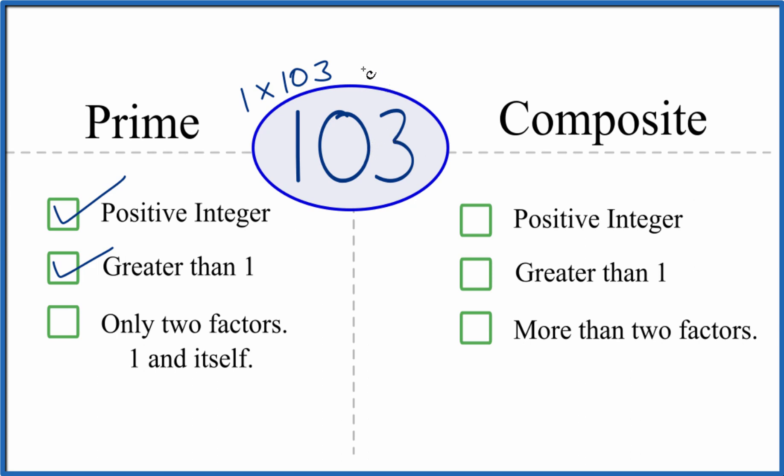It turns out that there are no other numbers that can divide evenly into 103. So there are only two factors. With only two factors, that makes 103 a prime number.